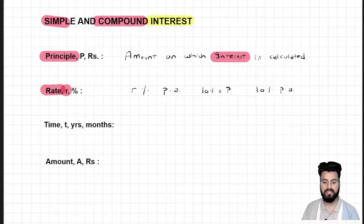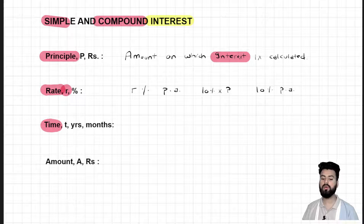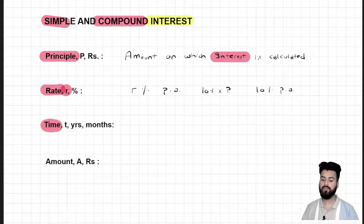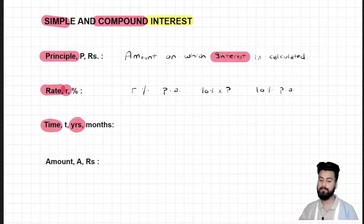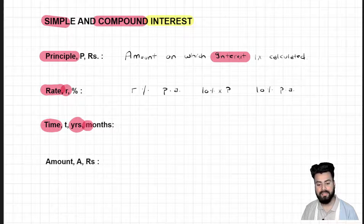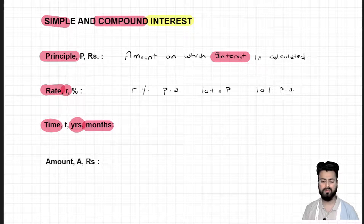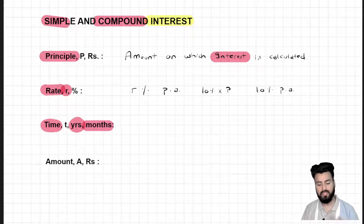Another factor on which interest is dependent is time — for how much time I have invested my money or borrowed it. Usually, time is represented in years or some part of years. In some cases, time will be given in months, but usually it is given in terms of years. So time is also an important factor on which interest is dependent.